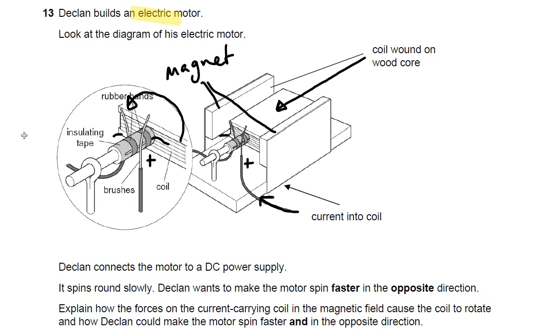Declan connects the motor to a DC power supply, so direct current, always going around in one direction. It spins around slowly. He wants to make it spin faster and he wants to change the direction. These should be things that you memorize: a list of things you can do to increase the speed of a motor, and a list of things you can do to change the direction of the motor.